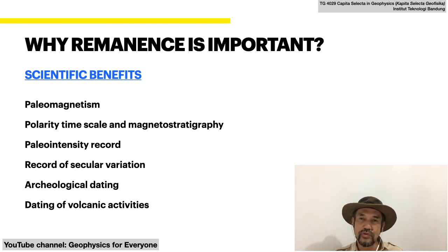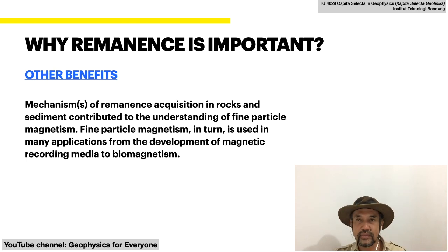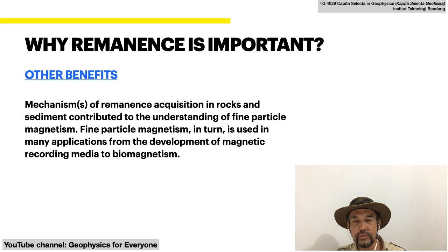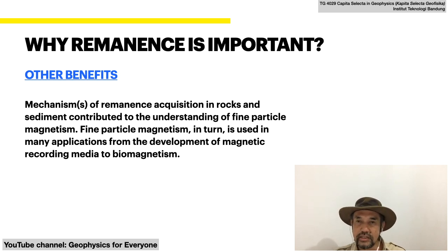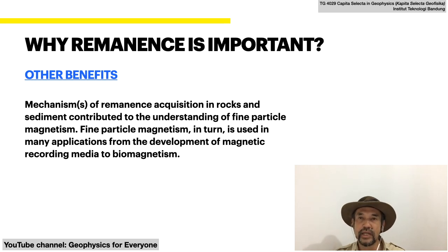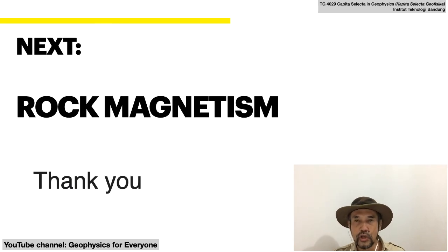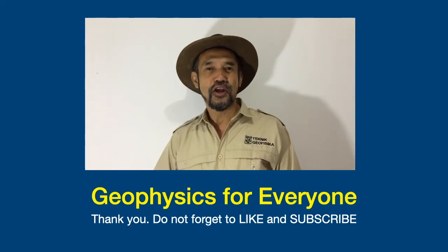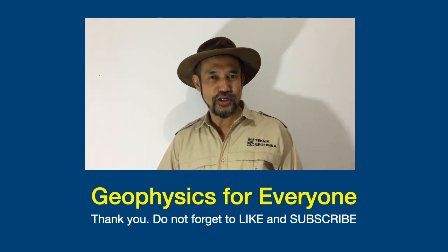Remanence is also used for archaeological dating and in some cases for dating volcanic activity. The mechanisms of remanence acquisition in rocks and sediments have contributed greatly to the understanding of fine particle magnetism, which in turn is used in many applications — from the development of magnetic recording media to biomagnetism. In the next video we will be talking about rock magnetism. Thank you for watching, I hope you enjoyed the video. See you later, bye.